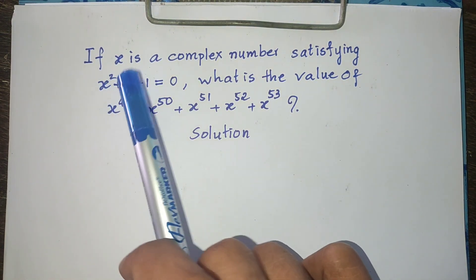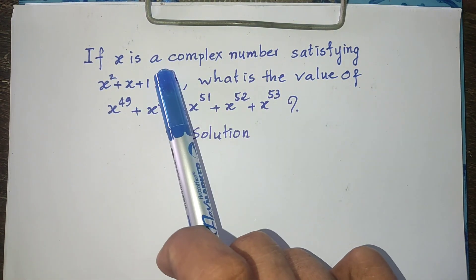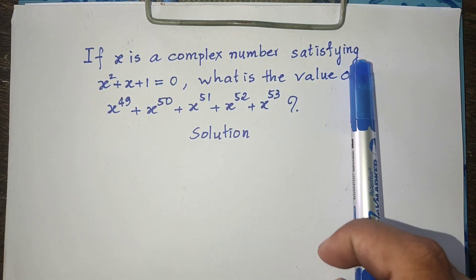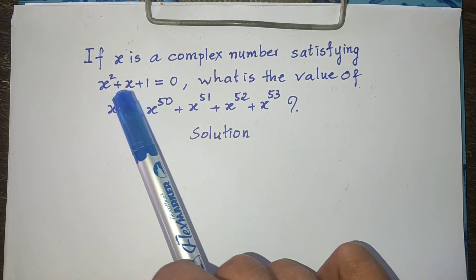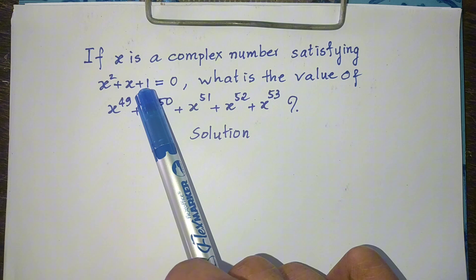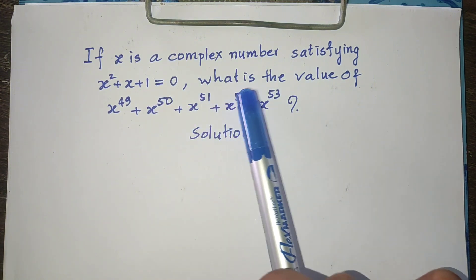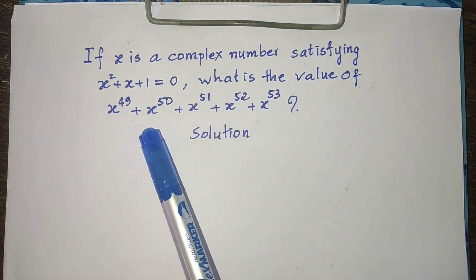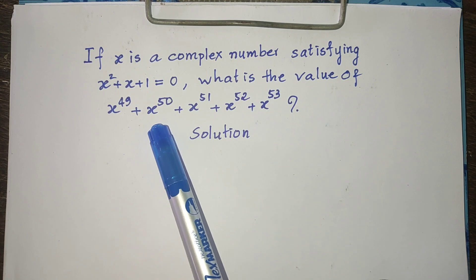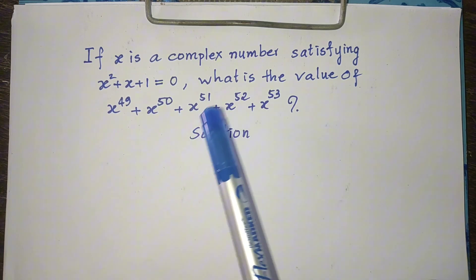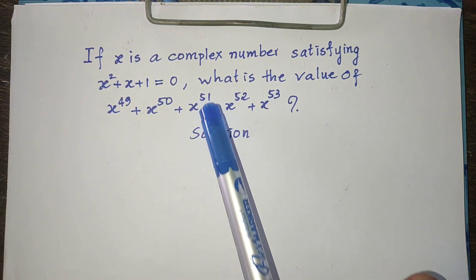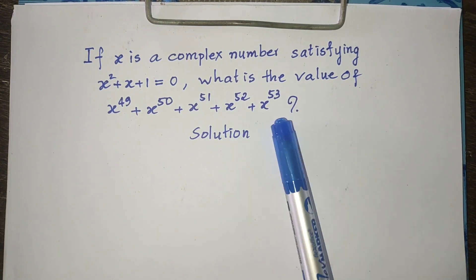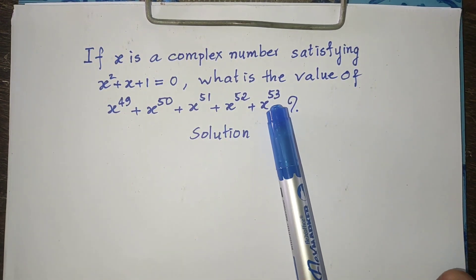If h is a complex number, so h squared plus h plus 1 equals 0, what is the value of h power 49 plus h power 50 plus h power 51 plus h power 52 plus h power 53?